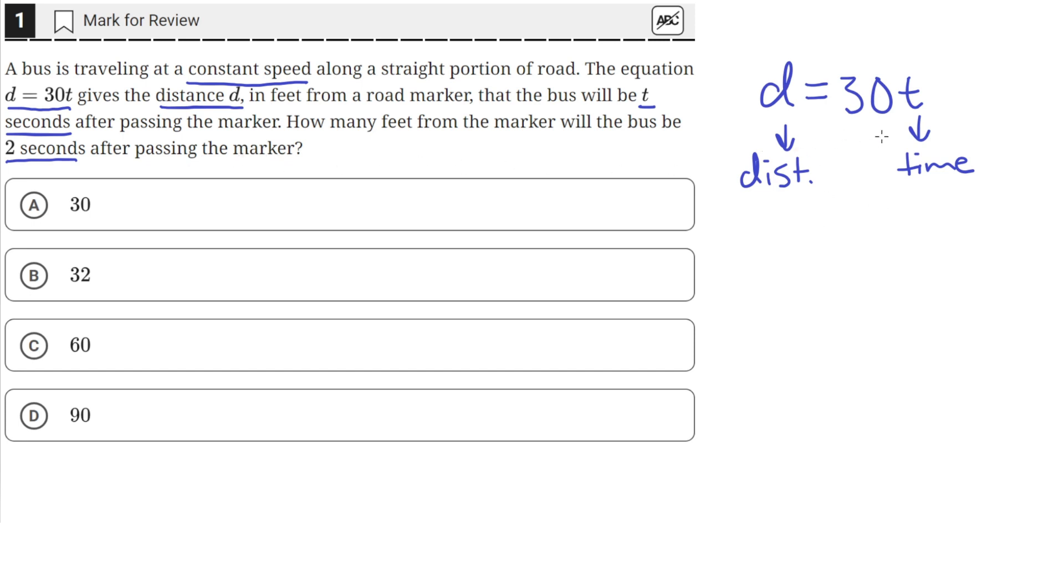So we can just use this equation and plug in a value of 2 for the time to find the distance that the bus travels from the marker. So we'll just have d equals 30 times 2 which is just equal to 60. So after 2 seconds the bus travels 60 feet from the marker which is answer choice C.